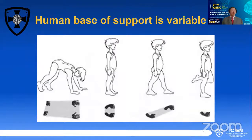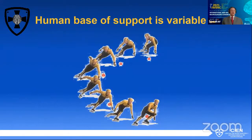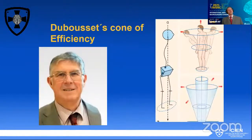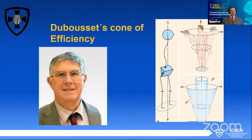The base of support is not in a static position — it changes as you change your position. During sports, like skating, the center of gravity moves away from the base of support, which is why the athlete must move his arms to maintain balance. This concept leads to Dr. Dubousset's cone of efficiency: if you maintain the body's center of gravity within this cone, you remain stable enough for upright posture. The further away from the center of the cone, the more energy required to not fall over.